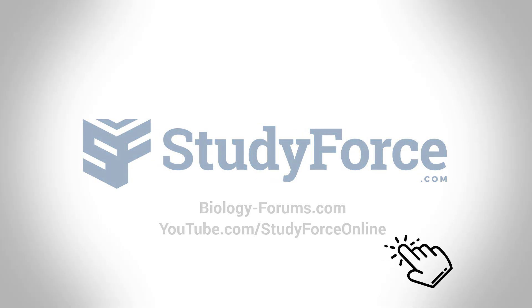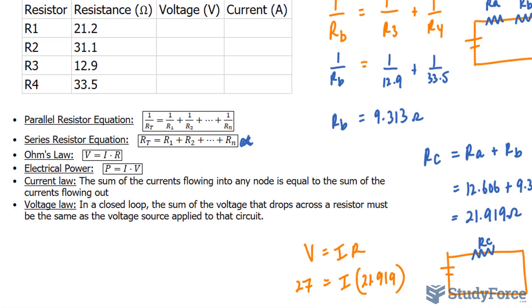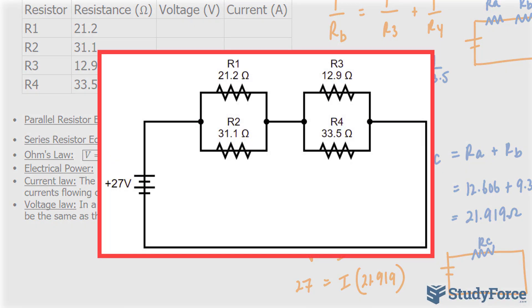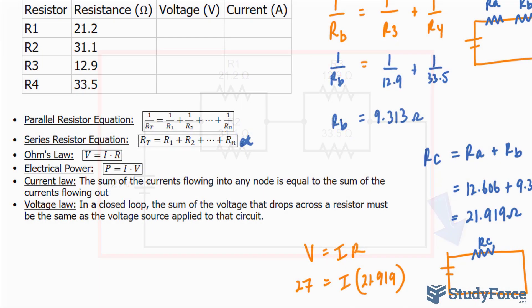Welcome back to part two of this series. In part one, we ended up combining all the resistors into a single resistor, which we called RC. We found its total resistance and its current using Ohm's law. And with that being said, using the resistance and current of RC, remember that RC is a combination of RA and RB.